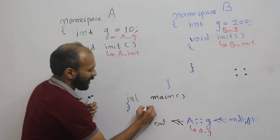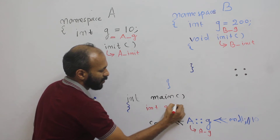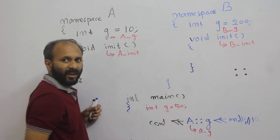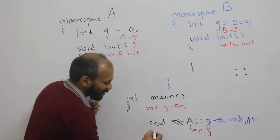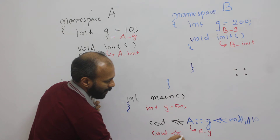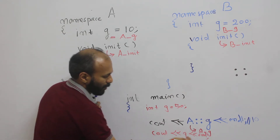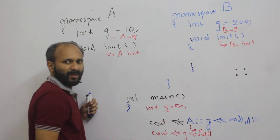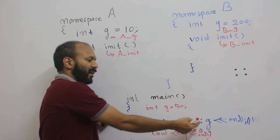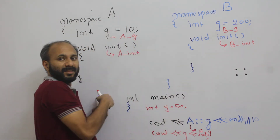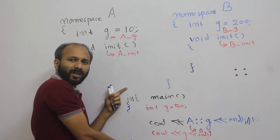Now assume I have a local variable int g which is equal to 50. I wanted to print this local variable g. Here you can simply write cout << g, which will print the local variable. So you have a chance of using the local variable as well as the variable present inside the namespace. You may also have a global variable which you can print too.